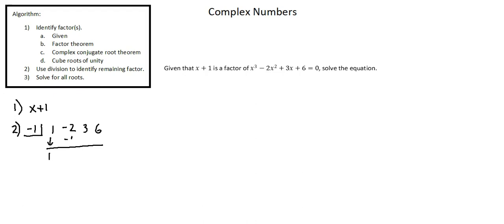I sum the two numbers in the next column. Negative 2 plus negative 1 is negative 3.